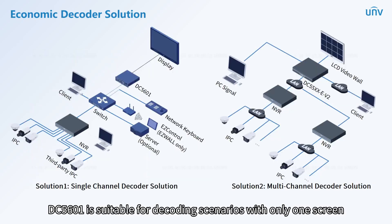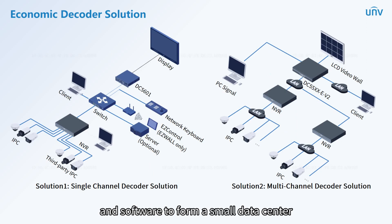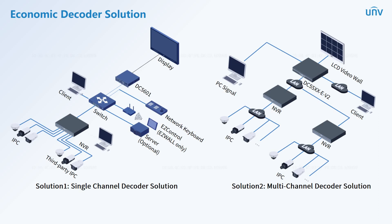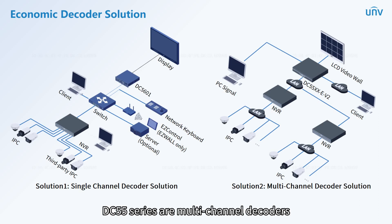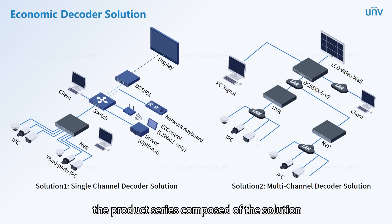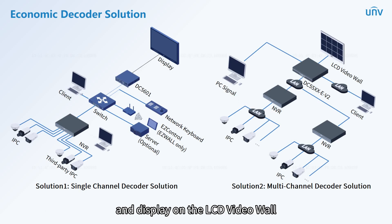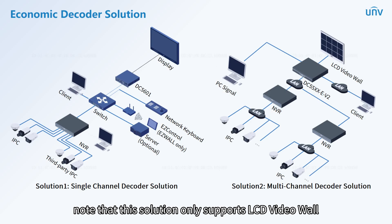As a single-channel decoder, the DC5601 is suitable for decoding scenarios with only one screen, and can be combined with IP cameras, a server, network keyboard, and software to form a small data center suitable for a single screen. The DC55 series are multi-channel decoders, so the products support multiple LCD screen video walls. The solution can support decoding live video from IP cameras and displaying on the LCD video wall, and also supports PC signal input. Note that this solution only supports LCD video wall.